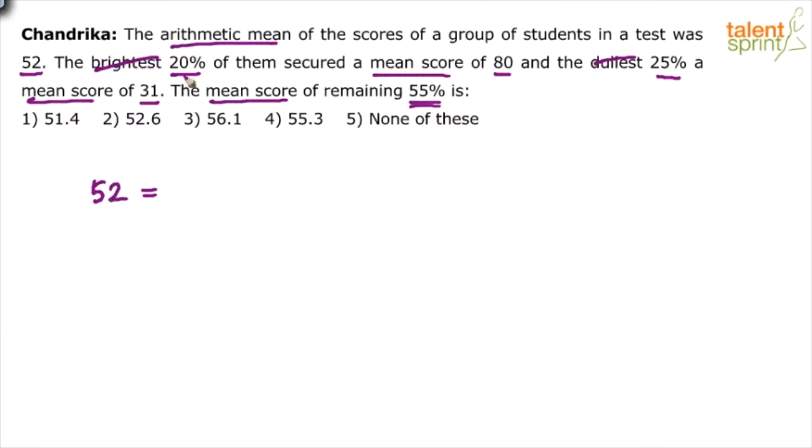Sum of the scores of brightest 20 percent plus the sum of the score of the dullest 25 percent plus the sum of the scores of remaining 55 percent divided by 100. Let's assume there are 100 students in this class right, total we have got 100 students.